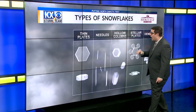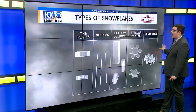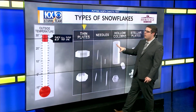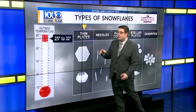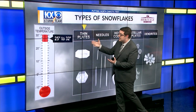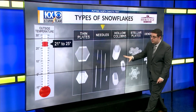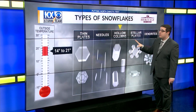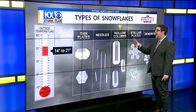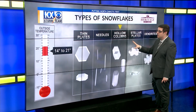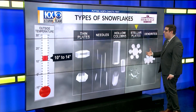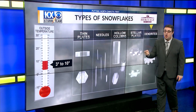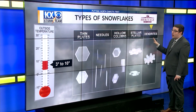When looking at temperatures to see the different types of snowflakes: sitting right around 25 to 32 degrees outside, that's when we see thin plates form. We drop the temperatures a little more to 21 to 25 degrees and we start to see needles. When we get to about 14 to 21 degrees outside, we see hollow columns. Now getting down to 10 to 14 degrees, we start to get those stellar plates, and then right around 3 to 10 degrees we start to see those dendrites.